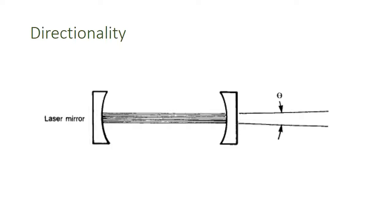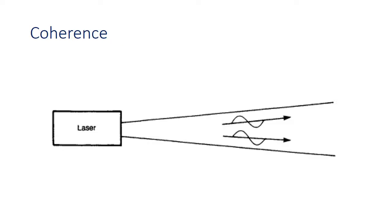Directionality is one of the reasons that the intensity of laser light is quite high. Characteristic of directionality coupled with monochromaticity along with the phase consistency is described by the term coherence.